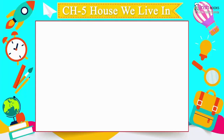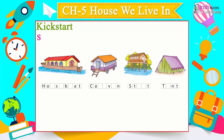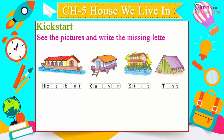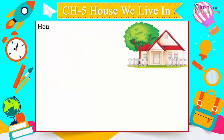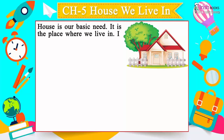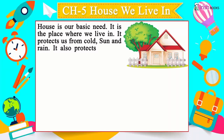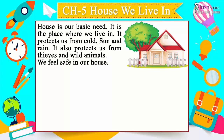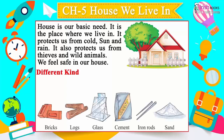Chapter 5: The House We Live In. See the pictures and write the missing letters. House is our basic need. It is the place where we live in. It protects us from cold, sun and rain. It also protects us from thieves and wild animals. We feel safe in our house.